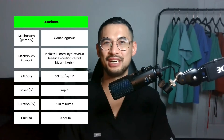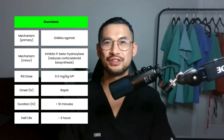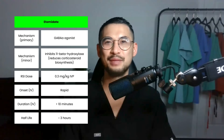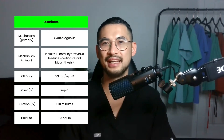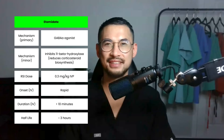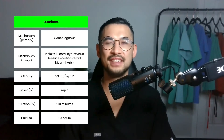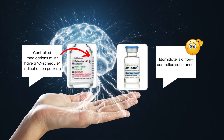Etomidate is a commonly used hypnotic agent for induction. It binds to the GABA-A receptor to exert its potent sedative effects. Etomidate has been preferred given its cardiovascular-neutral profile, having minimal effects on blood pressure and heart rate. The weight-based dose is 0.3 mg per kg IV, with a rapid onset of action. The reported half-life is around 3 hours and the duration is less than 10 minutes. Technically, etomidate isn't classified as a controlled substance, making it more accessible in emergent situations.